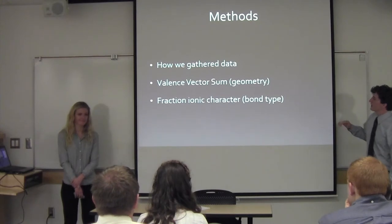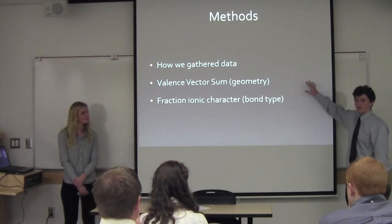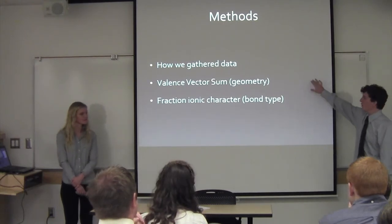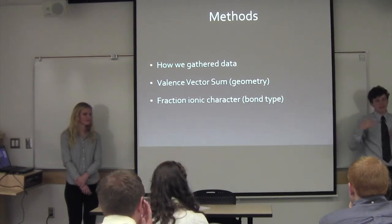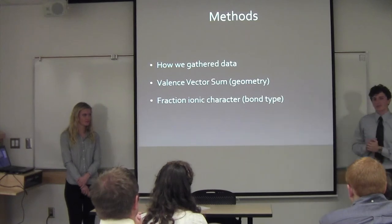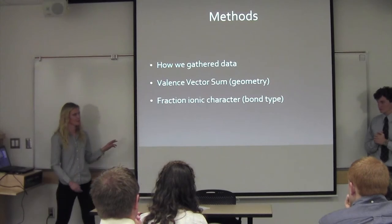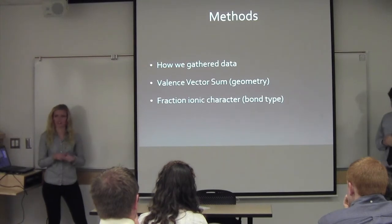We wanted to find the valence vector sum as a function of fraction ionic character. So we plotted our y and x data and used MATLAB to make a third-degree polynomial best-fit line of our data points. Just remember when looking at the results: the valence vector sum is a representation of the geometry of the molecule, and the fraction ionic character is a representation of how ionic it is.